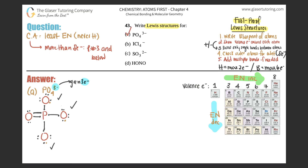Part A is done. The only thing left to add is brackets, because there was a charge. We added three electrons, so we bracket the whole structure and put a three minus. Part A is complete.